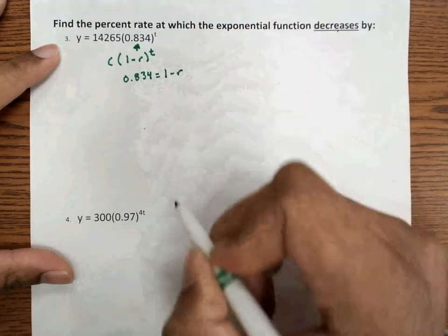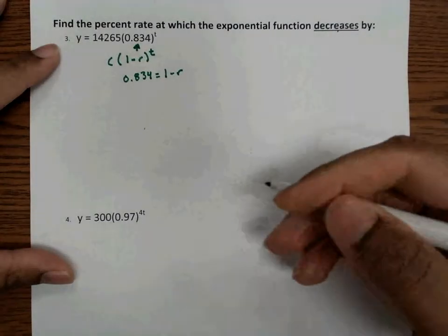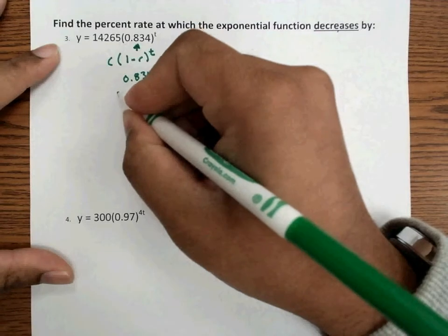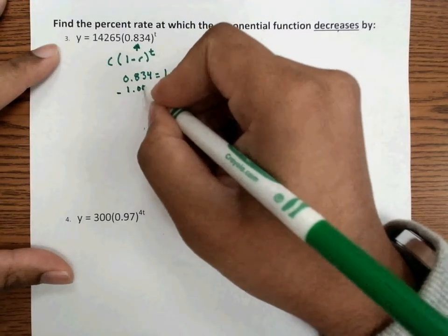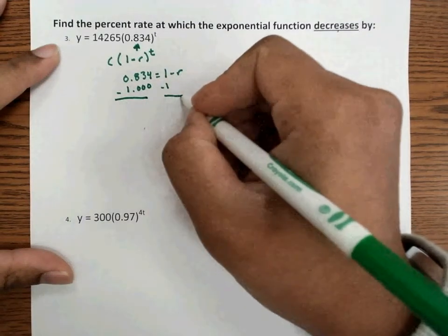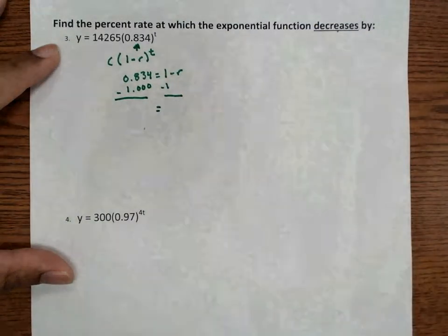Then all we do is, just like we do with exponential growth, we subtract the one. And some of you might need to add the zeros just to help you. Of course, this is calculator active.